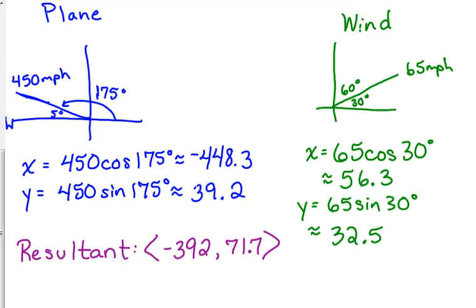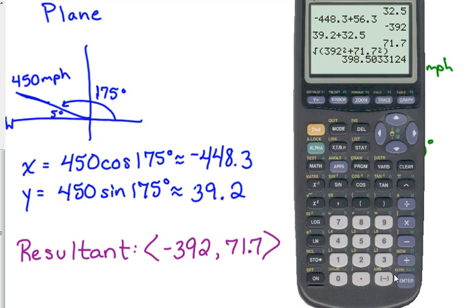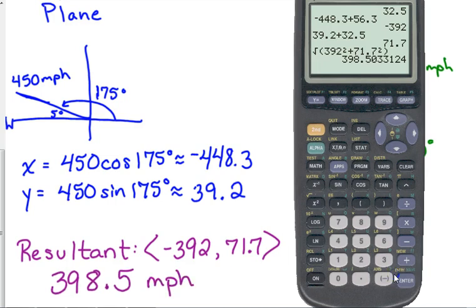Let's find its actual speed. The actual speed is the magnitude. So magnitude: square the x, square the y, add them together, take the square root. With the negative 392, either put parentheses around it or just drop the negative because it will mess up your answer if you do not. You will actually get an error because you can't take the square root of a negative. The actual speed of this airplane would be 398.5 miles per hour.